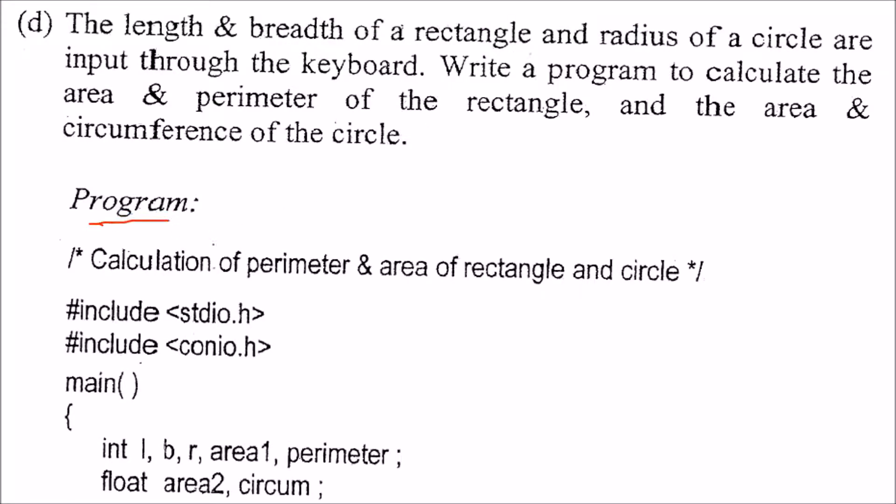We'll start a program to calculate the perimeter and area of rectangle and circle. We will include stdio.h and conio.h header files and then we'll start with main. These are for L, B and R - length, breadth and radius.